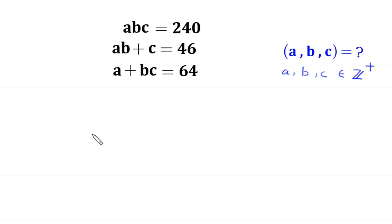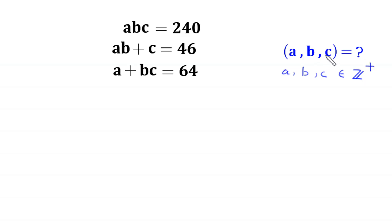Hello everyone, you are welcome to how to solve this very nice system of equations. ABC is equal to 240, AB plus C is equal to 46, and A plus BC is equal to 64. Our job is to find all possible values of A, B and C, where A, B and C are positive integers. So, let us start.